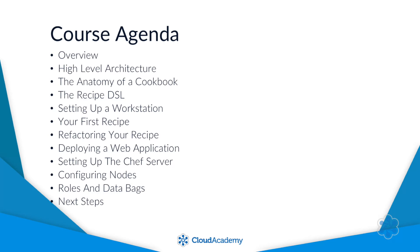Here's the agenda for this course. Some of these terms may not be familiar to you just yet, so don't worry if you're not familiar with them — by the end of the course, you will be. I'm going to start with an overview of Chef at a very high level, including which companies are using it and how they're using it. Then I'll drill down a bit more to cover the high-level architecture of Chef. After that, I'll talk about the anatomy of a cookbook. You're going to soon see that everything is named after something related to cooking. The following lesson, I'll cover the Recipe DSL.